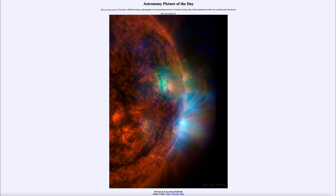Much of that material will rain back onto the sun as thousands-of-degrees-hot plasma rains onto the surface. Other material will extend outward into space. Sometimes it can be pushed off with enough intensity that we get solar flares — energy bursts that push material off the surface of the sun altogether.